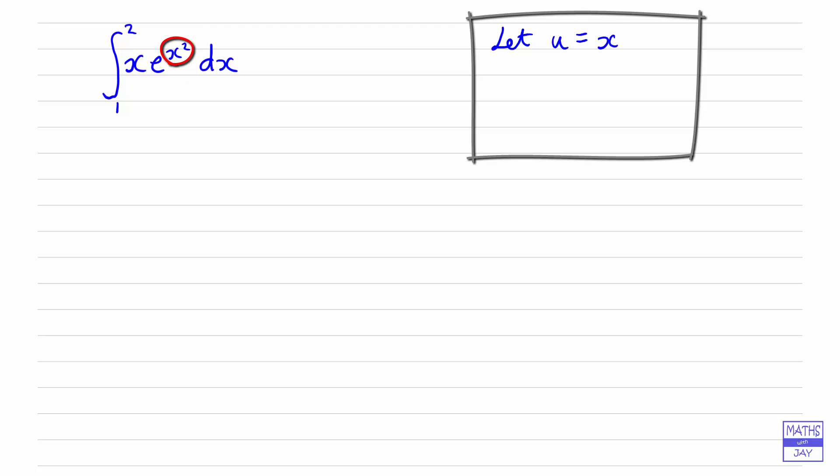So let's write that down at the side: u is x squared, and then when we differentiate that we get 2x. So let's just rewrite our integral to make it a bit clearer what we've got going on here.